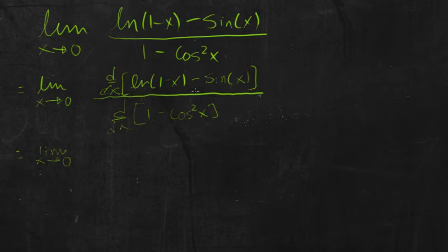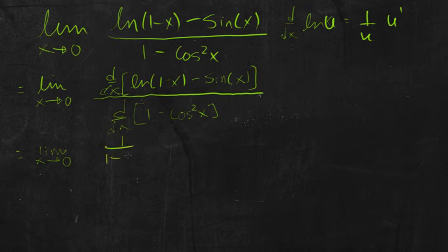So, we can take the derivative of this top guy. So if you remember, the derivative of ln of u is 1 over u times du. So, 1 over 1 minus x times the derivative of this guy on the inside, so basically the chain rule. The derivative of 1 minus x, that's just a linear function, so we end up with just the coefficient of this guy, so negative 1. And then minus, the derivative of sine is cos of x.